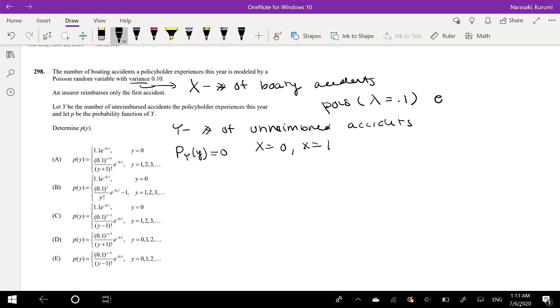And when there's one accident, the insurer still reimburses for the first accident, so there's still zero number of unreimbursed accidents. So what would this be equal to? Well, we know that the Poisson distribution PDF looks like this: e to the negative lambda, lambda to the k over k factorial, for the probability that it is equal to k.